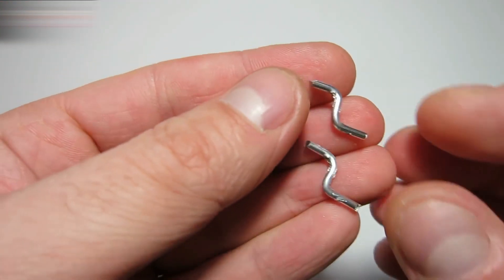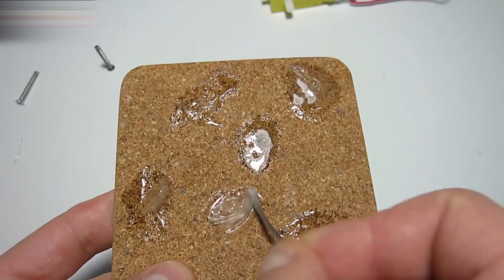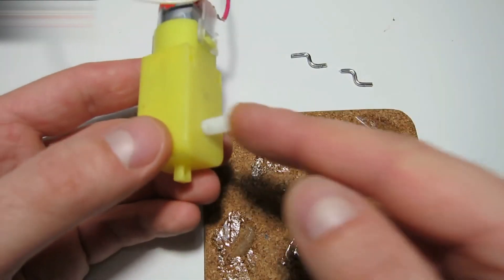Take two two-centimeter wires and shape them into this form. Take two-component adhesive and glue these wires to the reducer.